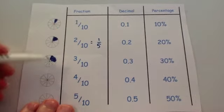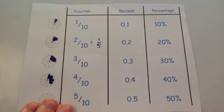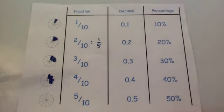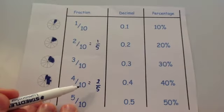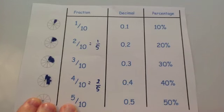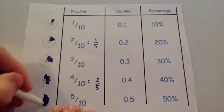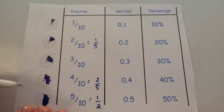Four tenths is four sections — notice that's the same as two fifths, which is also 40%. If you halve both the 4 and the 10 you get two fifths, so you can see how to simplify it. Five tenths is half the shape — 50% or 0.5. If you divide both numbers by five you get one half, confirming five tenths equals a half.